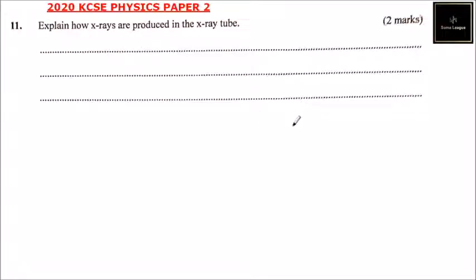This is question number 11 and we are told explain how x-rays are produced in the x-ray tube, and you get two marks. So in a very simple way of explaining this...